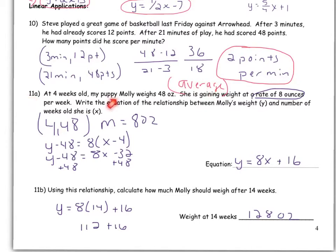All right, 11a, at four weeks, my puppy Molly, I should have said Josie, weighed 48 ounces. So here is a data point, four weeks, 48 ounces. She's gaining weight at a rate of 8 ounces per week, so that is my slope. So again, it's the same old, same old. y minus y sub 1 equals the slope times x minus x sub 1, and then you solve for y. So here is the equation, and then I can plug 14 in for the number of weeks. Simplify to get her weight at 14 weeks.